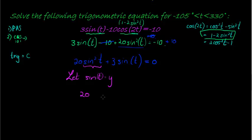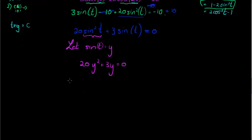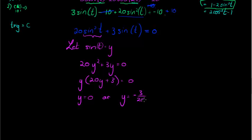So that I have 20 y squared plus 3 y is equal to 0. And isn't this easy to solve? Yes, very. We take out y as a common factor to get 20 y plus 3 equal to 0. So either y is equal to 0 or y is equal to negative 3 over 20 if I solve it.